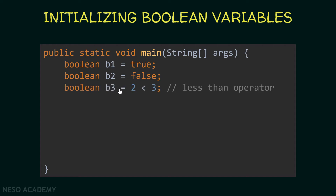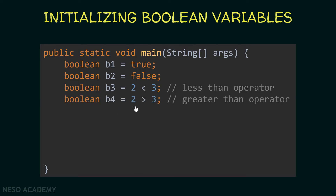We can also initialize a boolean variable using an expression. Here, b3 is set equal to '2 less than 3'. This expression evaluates to a boolean — true or false — and in this case it is true because 2 is less than 3. Similarly, b4 is equal to '2 greater than 3', which evaluates to false because 2 is not greater than 3.